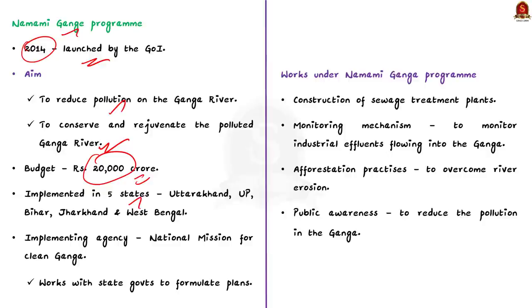Works carried out under the Namami Ganga program include: construction of sewage treatment plants to treat domestic sewage before letting it into the river; establishment of a monitoring mechanism to monitor industrial effluents flowing into the river; afforestation practices along the river banks to overcome river erosion; and creation of public awareness to reduce pollution in the river.